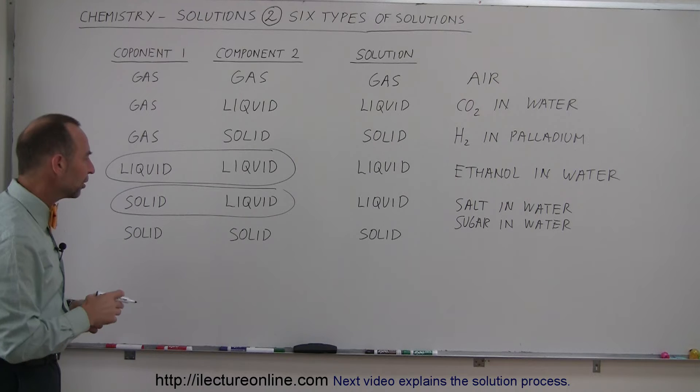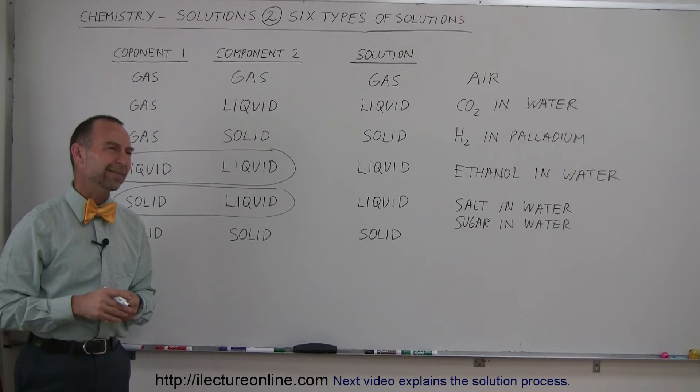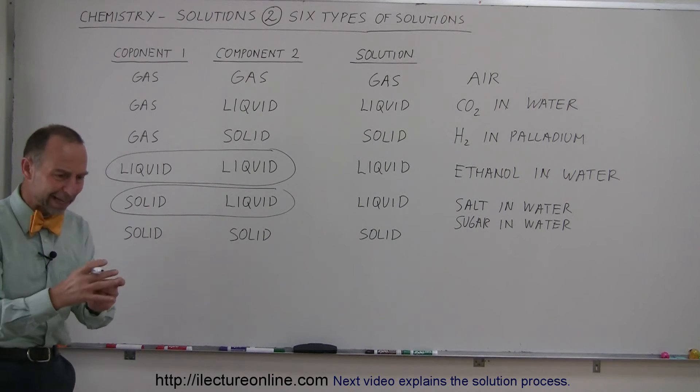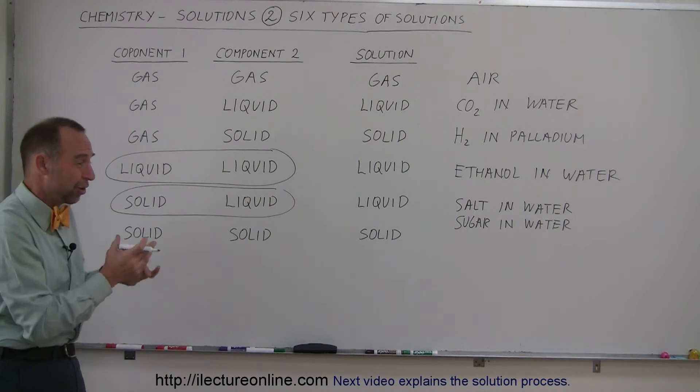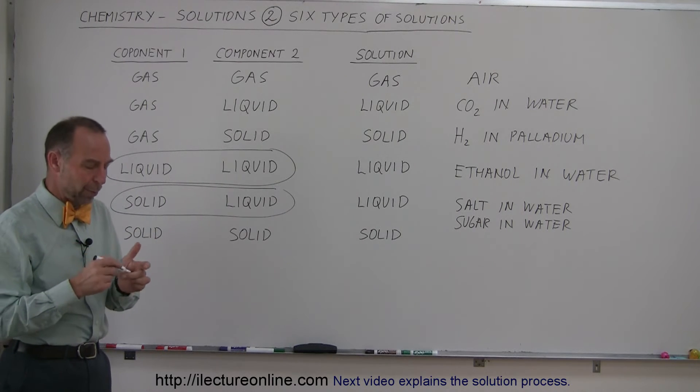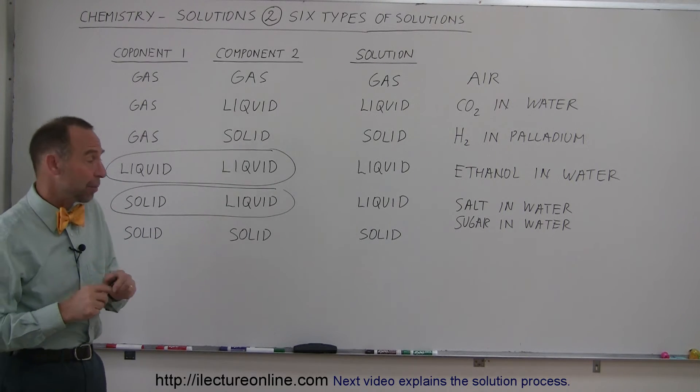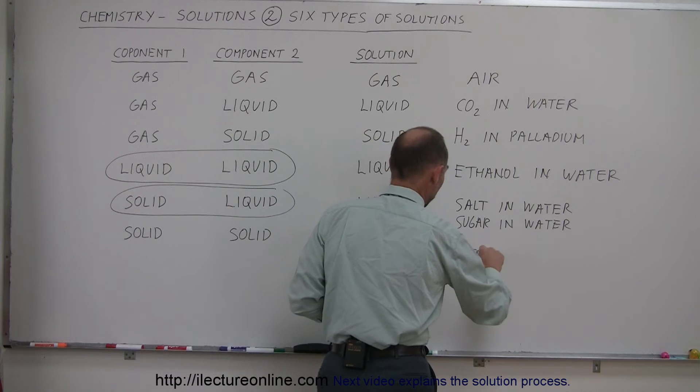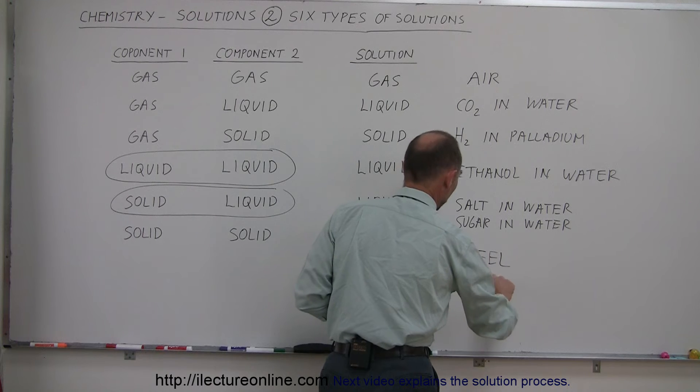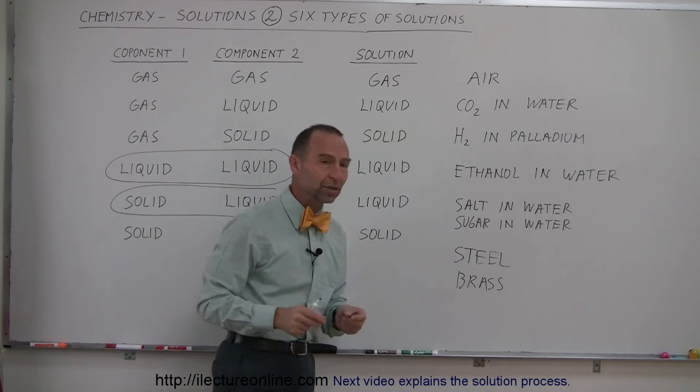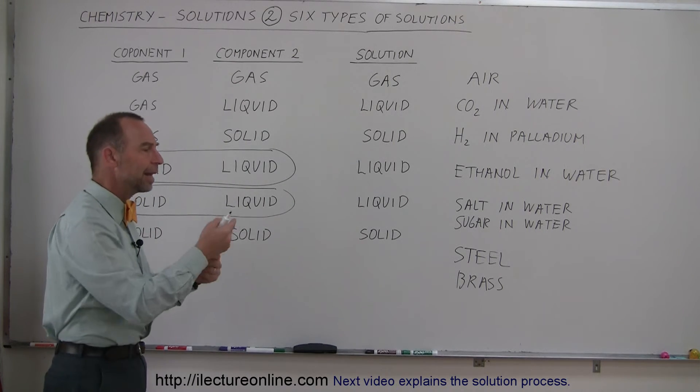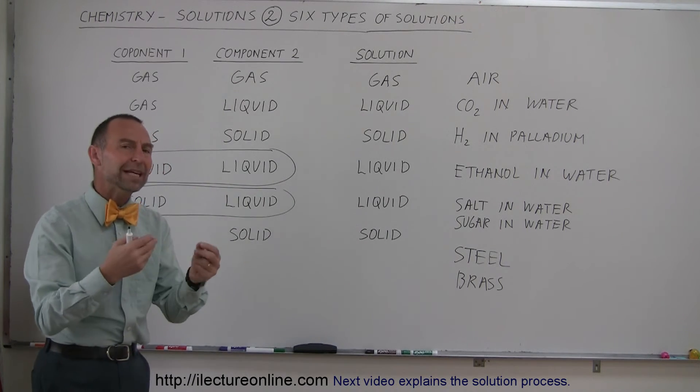And then we have solid and solid solutions. Wow, that's actually a hard thing to swallow when you think about solid and solid mixed together and called a solution, because a solid is a solid. But it turns out that when we make alloys, for example, when we make steel or when we make brass, those are homogeneous mixtures. In other words, you take one piece of steel and another piece of steel that was made at the same time, it'll have the same quantities of each of the metals.